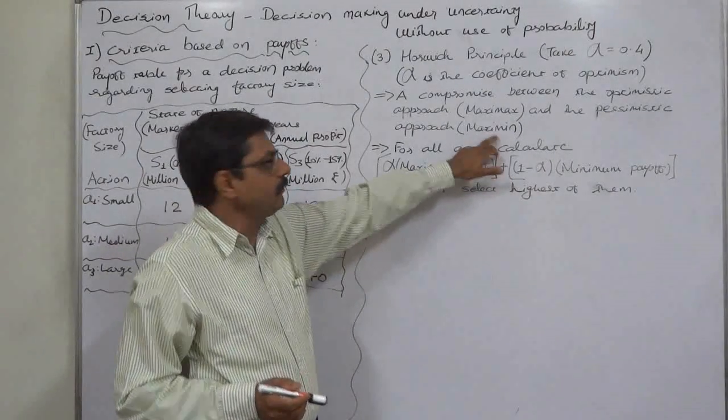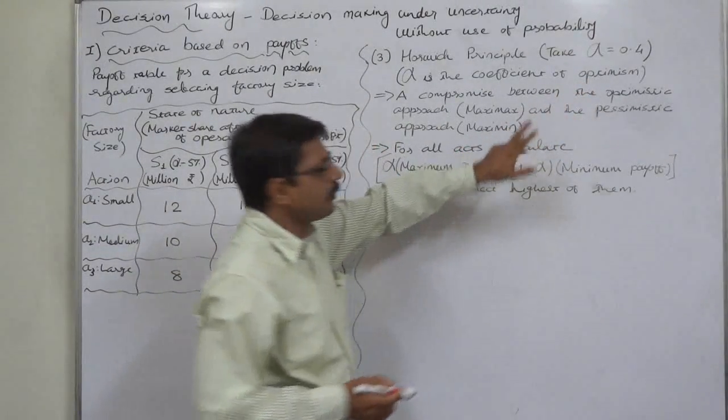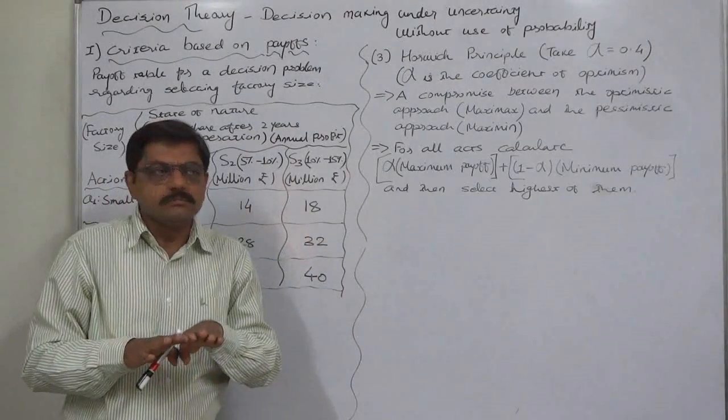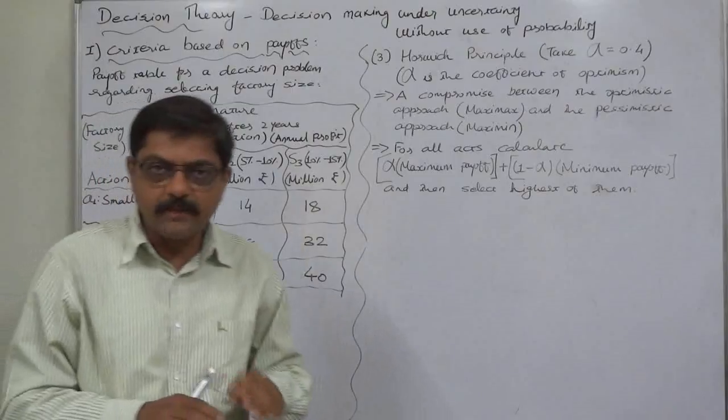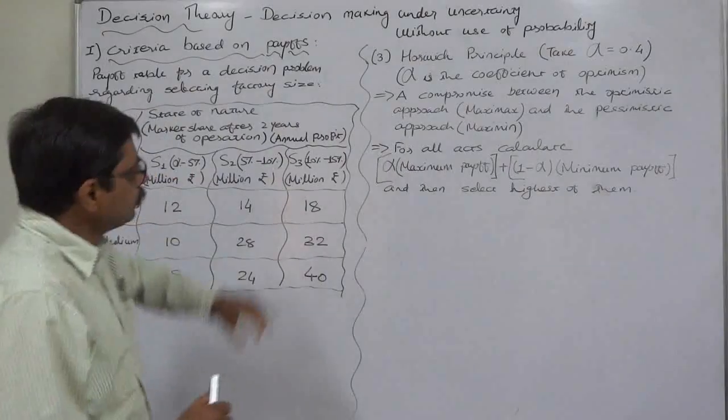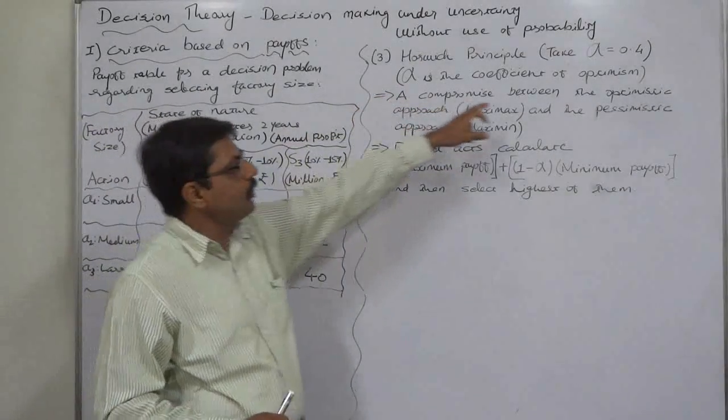Neither to select the maximum of the minimum nor the maximum of the maximum directly, but according to the approach of the decision maker, to make some balance using alpha, the coefficient of optimism.